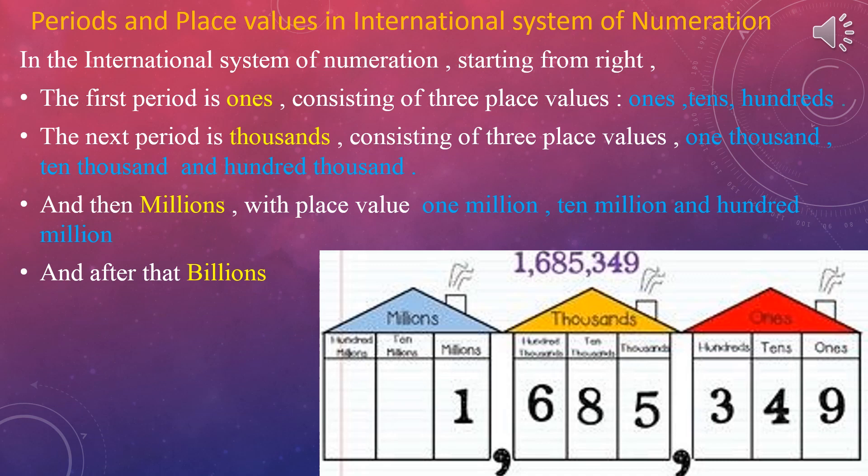Periods and place values in the international system of numeration: starting from the right, the first period is ones. Like the Indian place value system, it consists of three place values — ones, tens, and hundreds.